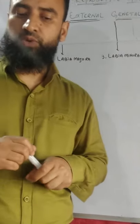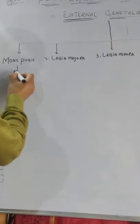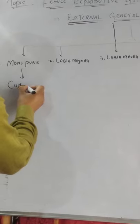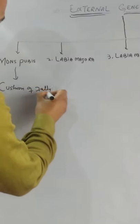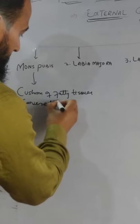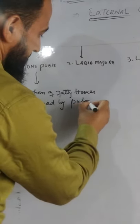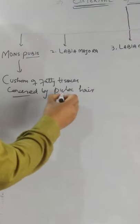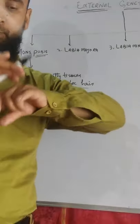Mons pubis is a cushion of fatty tissue covered by skin and pubic hair. You can remember it by the word 'pubis' — mons pubis is covered by pubic hair, so it can be easily identified. If you are asked to label the diagram, the part covered by pubic hair is known as mons pubis.